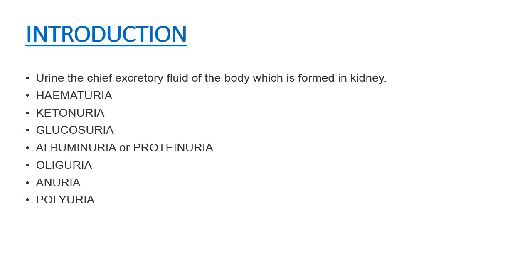It also indicates liver disease or renal diseases. The next condition is albuminuria or proteinuria, which is the presence of protein in the urine. It indicates severe exercise, kidney diseases, damage to the lower urinary tract, pregnancy, high protein diet, or dehydration.